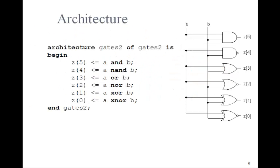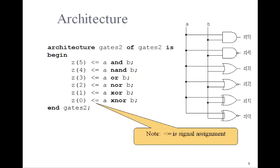Let's look at the architecture of the program. The architecture of the second part of the VHDL program looks like this for our problem. And notice that we simply use these assignment statements for each of these outputs. And notice we use the signal assignment, less than or equal. So Z0, which is down here, you see as the output of the XNOR gate is just A XNOR B. Similarly, Z5 up here is just A AND B.